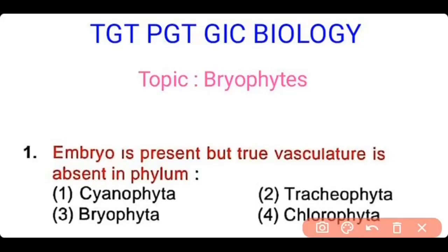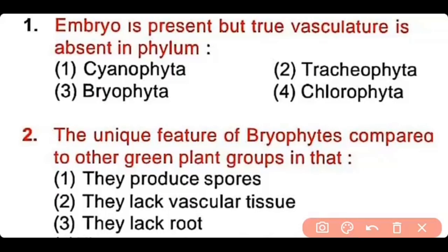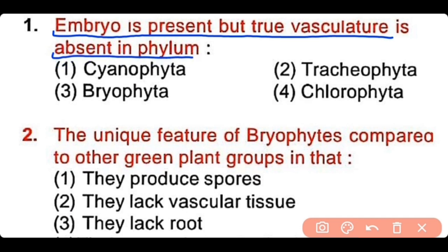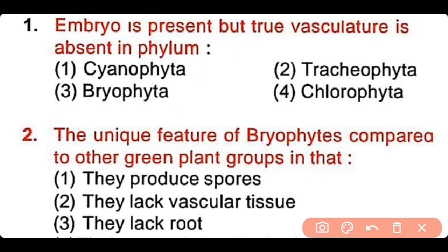In this video, we will see the most important questions about bryophytes which TGT, PGT, or different state exams consider very important. Question number 1: Embryo is present but true vasculature is absent in which phylum? Options: Cyanophyta, Tracheophyta, Bryophyta, Chlorophyta. The answer is option 3. Bryophytes have an embryo but they have no vascular tissue.